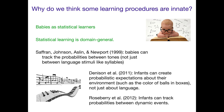Something to keep in mind is that statistical learning — counting things and learning from those counts — is a domain-general ability. You can use it across cognitive domains. You can use it in language-like things. We saw an example where babies can track the probabilities between syllables, but also between tones, just musical tones — so that's in the audition domain. Infants can also create probabilistic expectations about their environment, such as the color of balls and boxes, which is about colors and concepts, not necessarily about language.